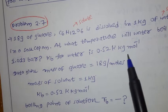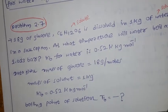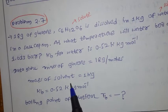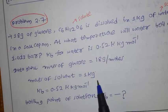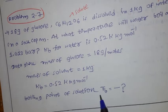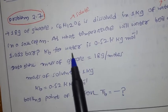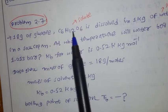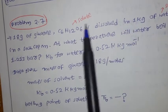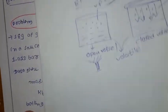Let us list the given data. Mass of glucose: 18 grams. Mass of solvent: 1 kg. Kb is already given. What we have to find out is the boiling point of the solution — that is, after adding the solute to the solvent, at what temperature will it boil?